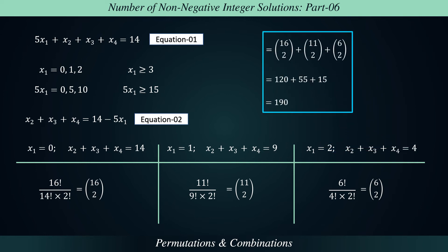Adding these values, we get 190. Hence, the total number of non-negative integer solutions of equation 1 equals 190.